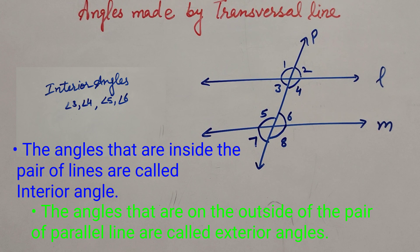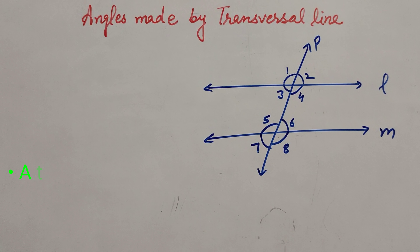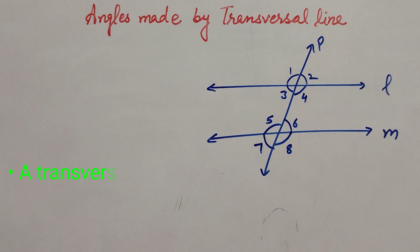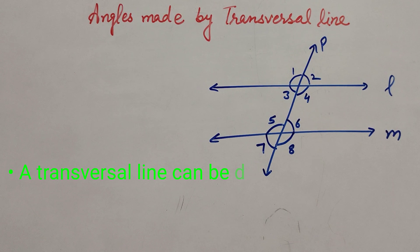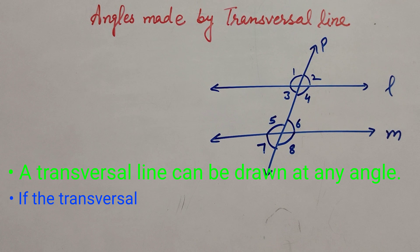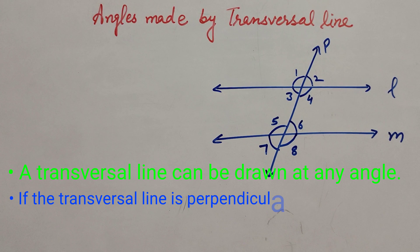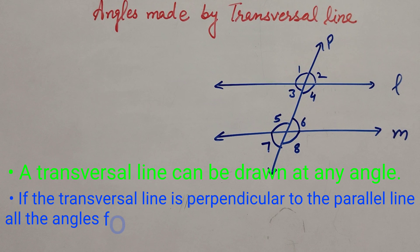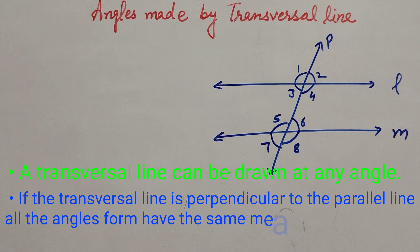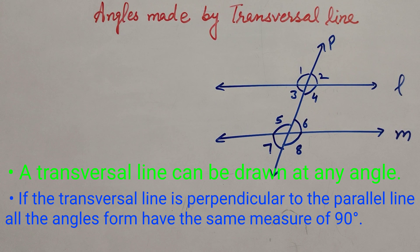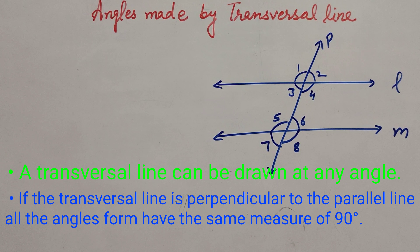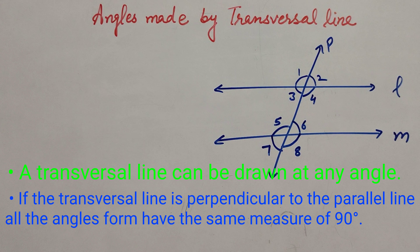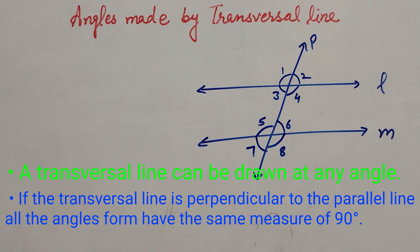A transversal line can be drawn at any angle. If the transversal line is perpendicular to the parallel lines, all the angles formed have the same measure of 90 degrees.